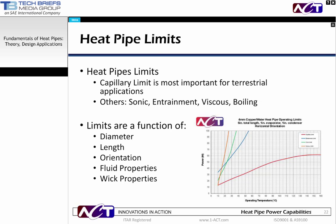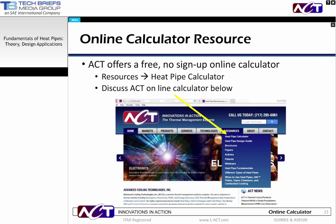Heat pipe designers are familiar with these limits and can calculate them very quickly for all applications. For terrestrial applications, the first limit reached in most cases is the capillary limit, which is the ability of the wick structure to overcome the various internal pressure drops created in the heat pipe. The figure shown here is a plot for all the limits — capillary, entrainment, sonic, and viscous — and the capillary limit ultimately determines the capacity in this case. Key features that affect these limits include heat pipe diameter, length, orientation with respect to gravity, working fluid, and wick structure.